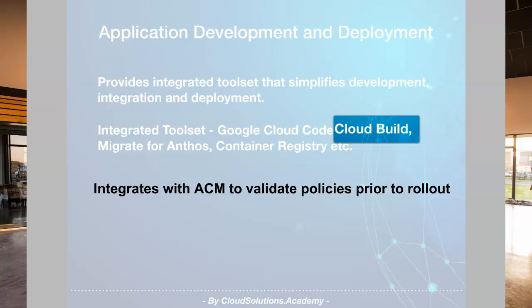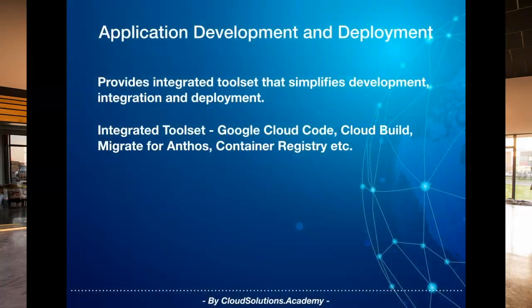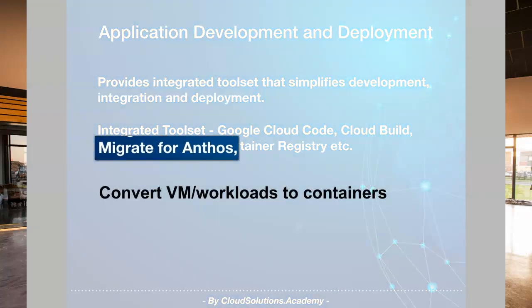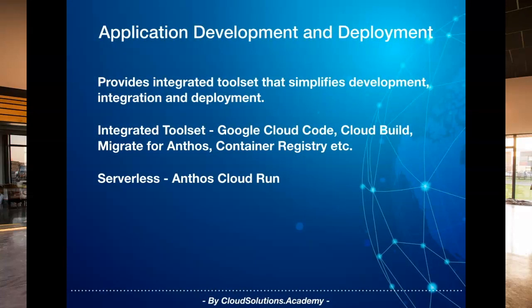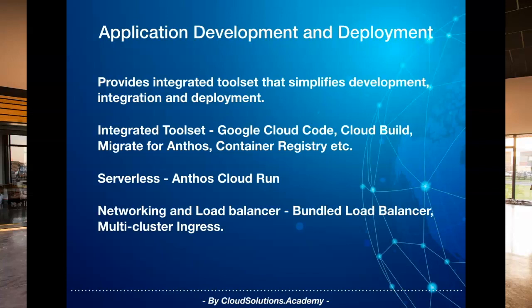Once the changes are validated, deployment changes are propagated to the production environment. Now if you are an on-prem customer looking at ways to modernize your application, you could use Migrate for Anthos to convert virtual machines into native containers. If your requirement is going serverless for some of your workloads, you could use Cloud Run for Anthos, which provides a flexible serverless development platform on Google Kubernetes Engine running on Google Cloud as well as on-premises. Anthos also provides a bundled load balancer for bare metal deployment and multi-cluster ingress which provides a global load balancer across regions.